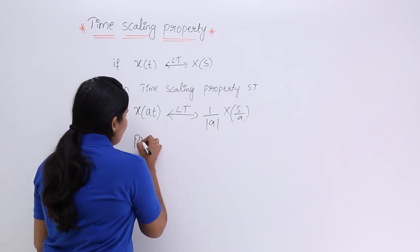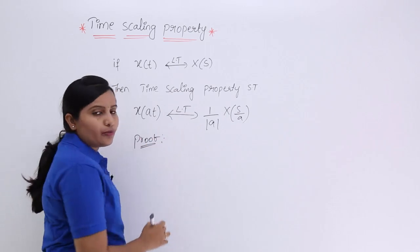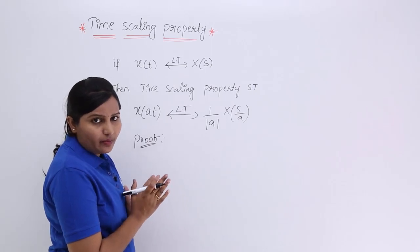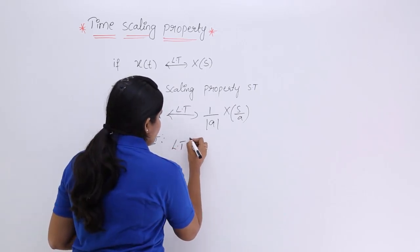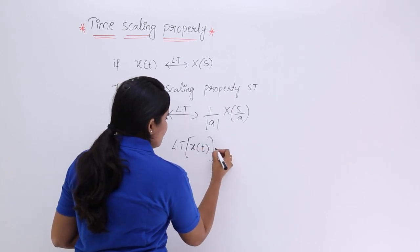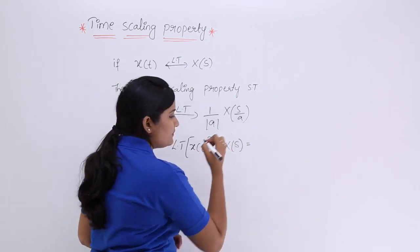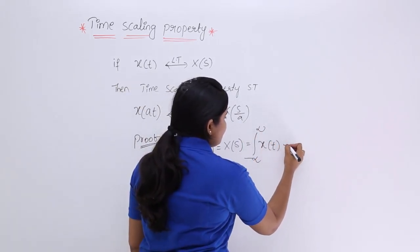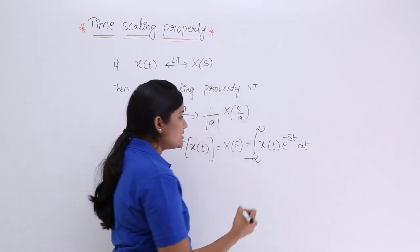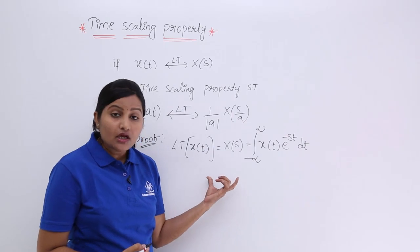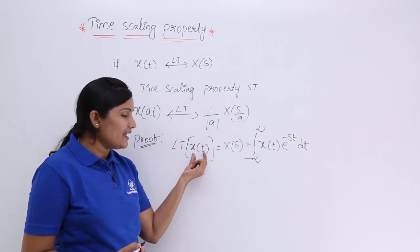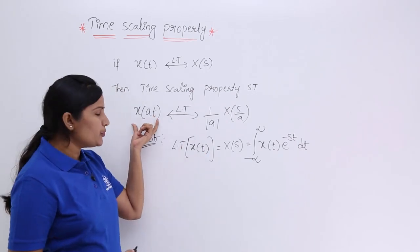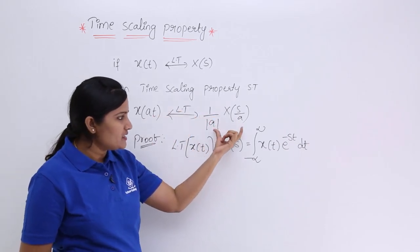Now I want to consider the proof for this property. To prove this, I will start from the basic Laplace transform equation. The Laplace transform of any signal x(t) is represented as X(s), which equals the integral from minus infinity to infinity of x(t) · e^(−st) dt. This is the standard Laplace transform equation to get the spectrum of x(t).